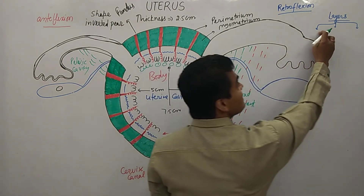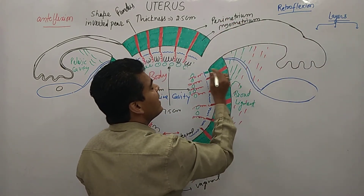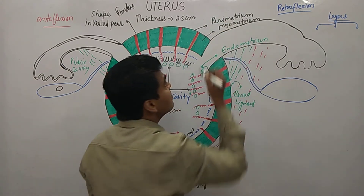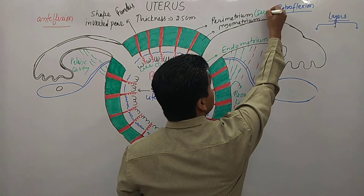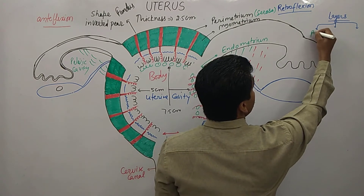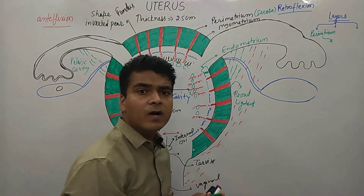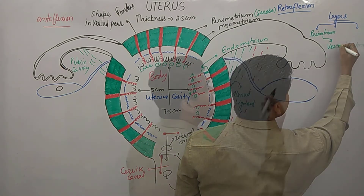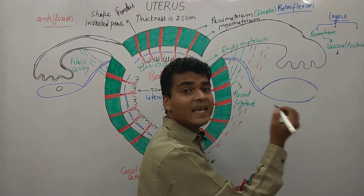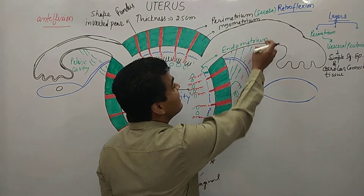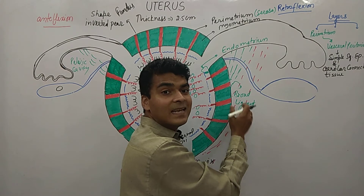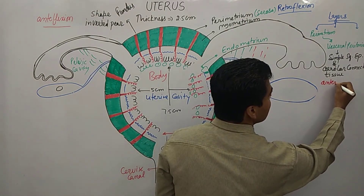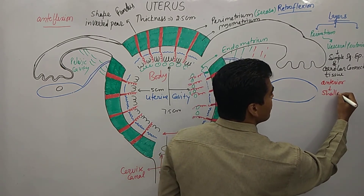Looking at the histology, the uterus has three layers: perimetrium, myometrium, and endometrium. The outermost portion — the perimetrium — is part of the serosa. The perimetrium is a visceral peritoneum composed of simple squamous epithelium and areolar connective tissue. Laterally, it becomes the broad ligament, and anteriorly it forms a shallow uterovesical pouch.